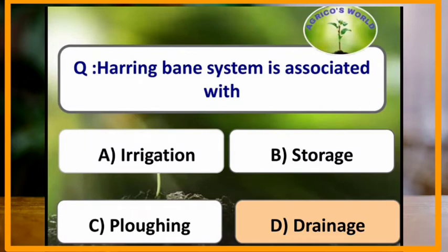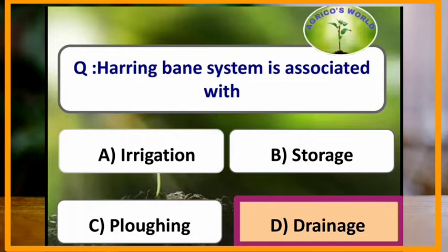Herringbone system is associated with which of the following? Herringbone system is associated with drainage.